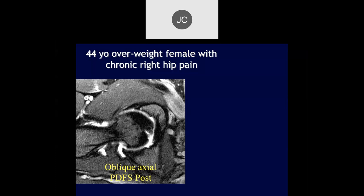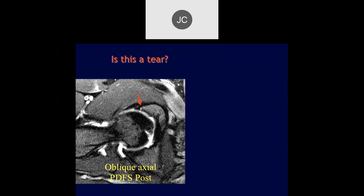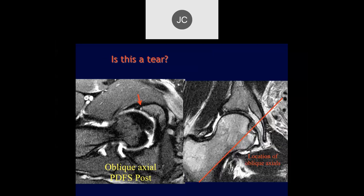Danny, what do you think of this case — 44-year-old overweight female with chronic right hip pain? Let's concentrate on the labrum. We see a little fluid here between the labrum and the bone, really at the chondrolabral junction. The question is: is this a tear? In this particular image from the oblique axial views, this is very far anterior.